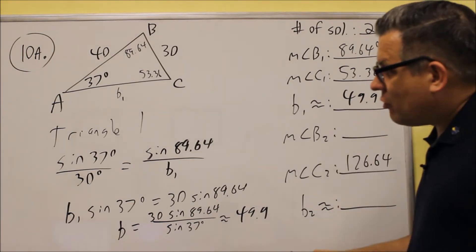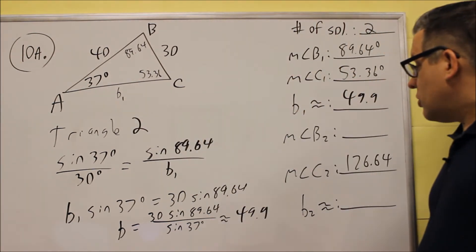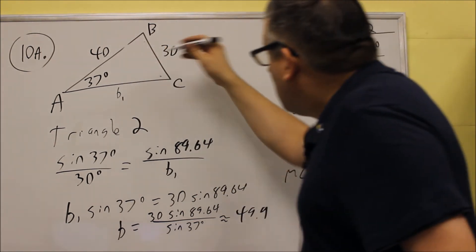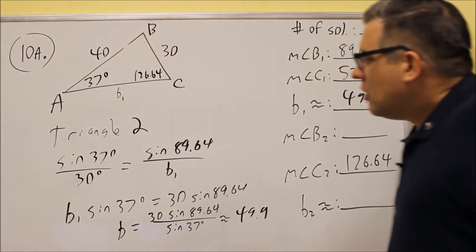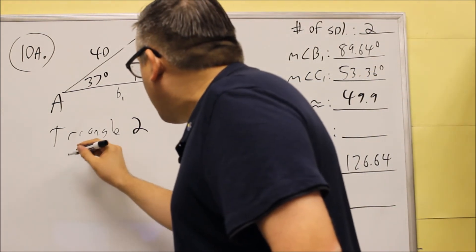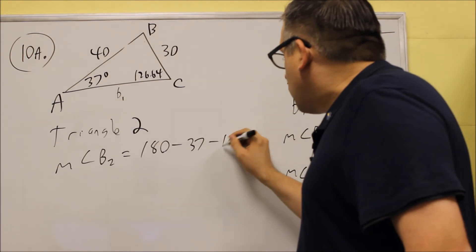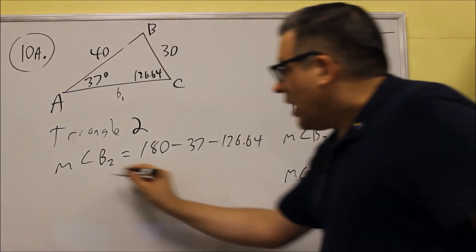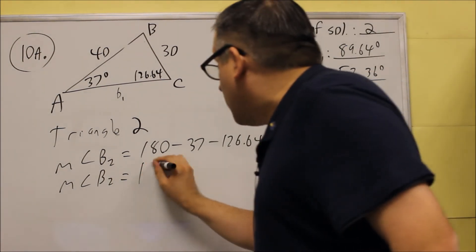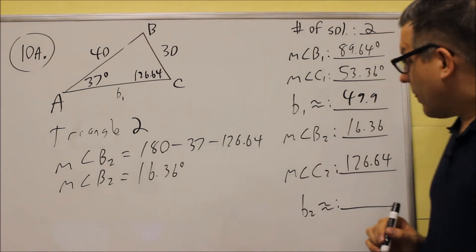Now we work Triangle 2 using C2 = 126.64 degrees. Angle B2 = 180 − 37 − 126.64 = 16.36 degrees. So B2 = 16.36 degrees.